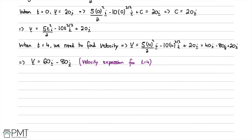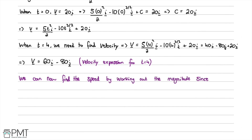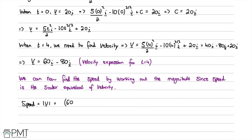We can now find the speed by calculating the magnitude of the velocity vector, since speed is the scalar equivalent of velocity. Speed = |v| = √(60² + (-80)²) = √(3600 + 6400) = √10000 = 100 metres per second.